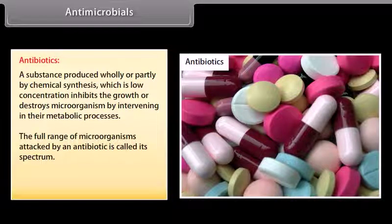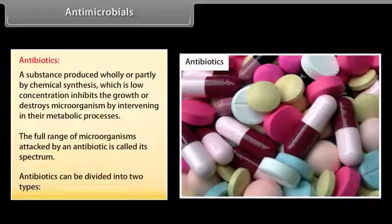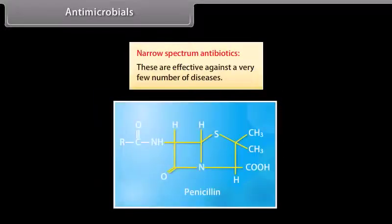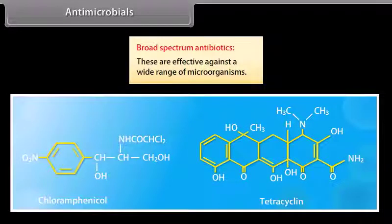The full range of microorganisms attacked by an antibiotic is called its spectrum. Antibiotics can be divided into two types: narrow spectrum antibiotics, which are effective against a limited range of microorganisms; and broad spectrum antibiotics, which are effective against a wide range of microorganisms. For example, chloramphenicol and tetracycline.